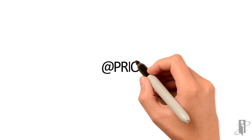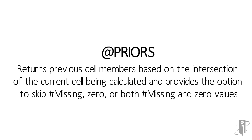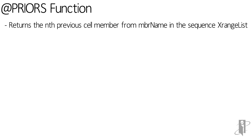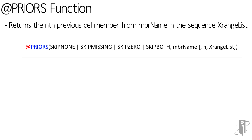The Prior S function is very similar to the Prior function, except Prior S allows for skipping #MISSING, 0, or both missing and 0 values. The Prior S function returns the nth previous cell member's value from member name in the sequence X range list and provides options for skipping #MISSING, 0, or both 0 and missing values. Like Prior, all other dimensions assume the same members as the current member being calculated. The Prior S function works only within the designated range and with level 0 members. There are four input parameters for the Prior S function.